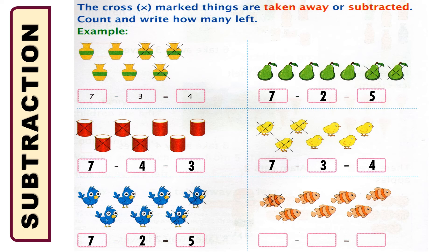And the last: you can see there were seven colorful fish. Among them, one fish is cross-marked. So how many remain unmarked? Counting: one, two, three, four, five, six — six fish were unmarked. So now we can write that seven subtraction one is equal to six.